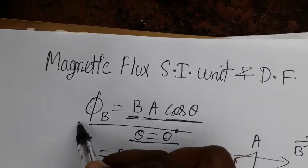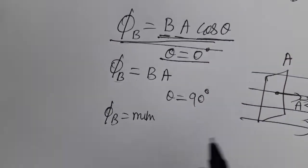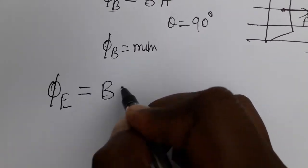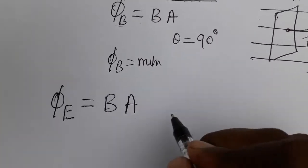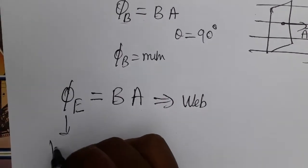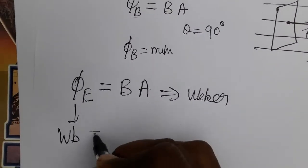Magnetic flux is equal to magnetic field into area. The SI unit for magnetic flux is Weber, which you can write as Wb or WEBR.